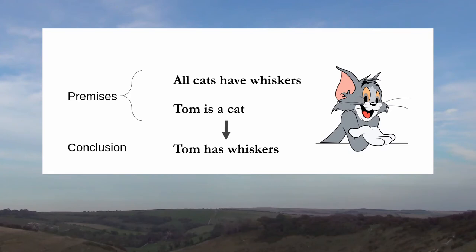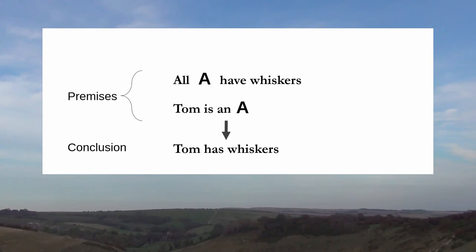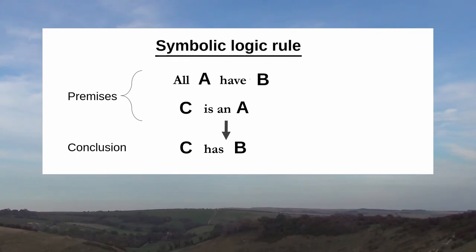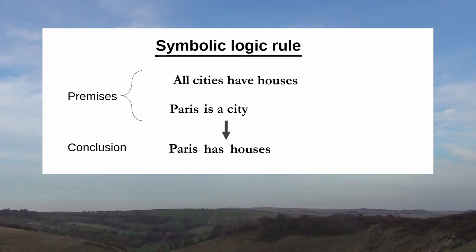We can then convert this argument into a symbolic form by replacing the term cat with the symbol A, whiskers with B, and Tom with C. And we now have a simple symbolic formulation of one of the rules of deduction into which we can swap other words in the place of A, B, and C. For example, if we replace A with cities, B with houses, and C with Paris, we then get another example of using the same deduction rule. If we believe that both of the premises are true, then logic compels us to accept that the conclusion is also true.